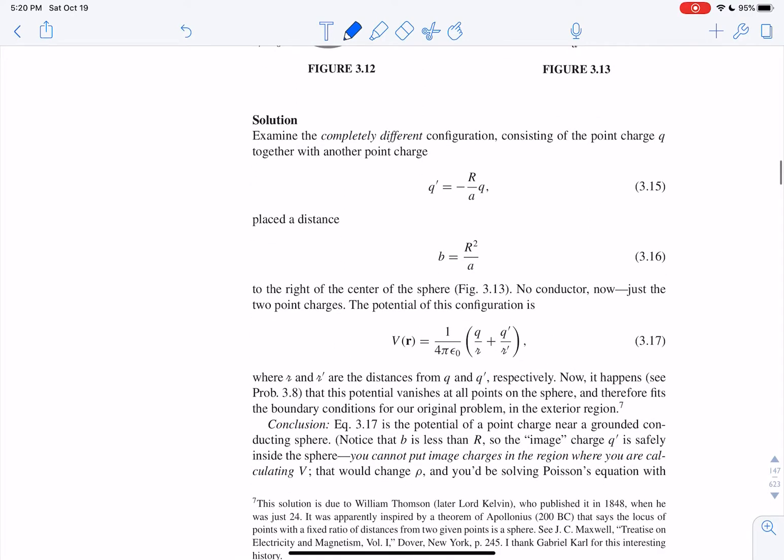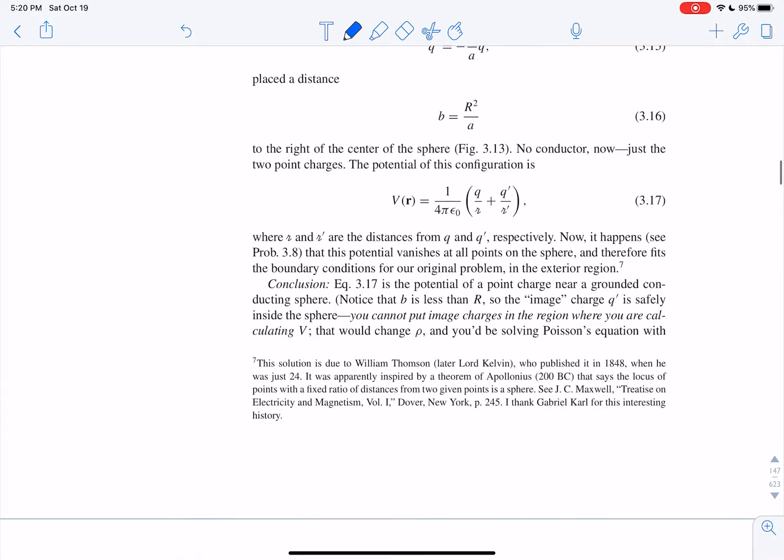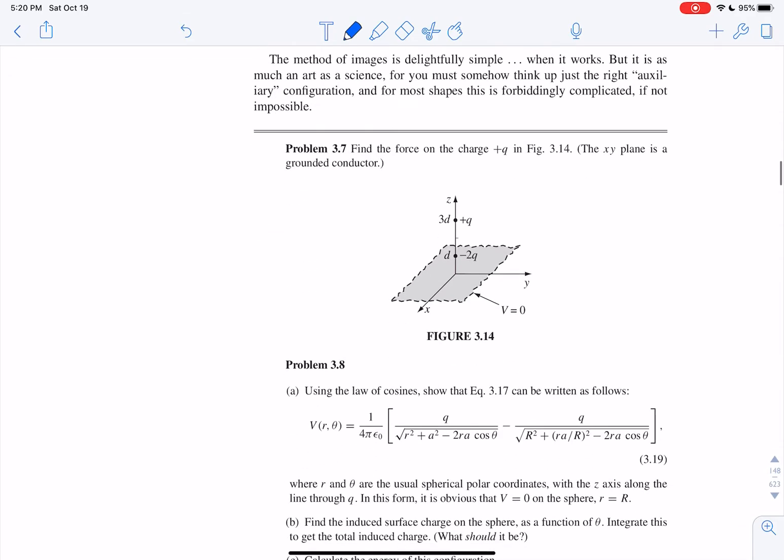You've got a point charge, q prime, let's say, at a distance, r squared over a, and if you do that, it sets up the same boundary conditions, then you can get your potential there, and you get all your other things.